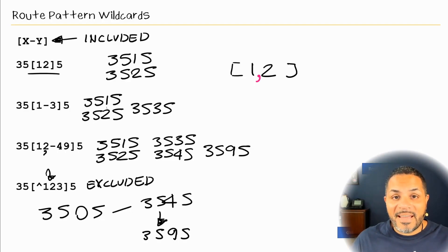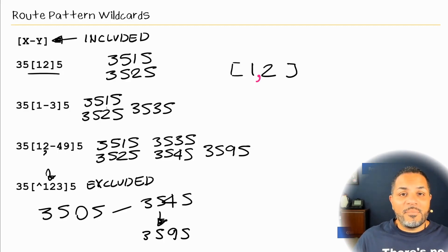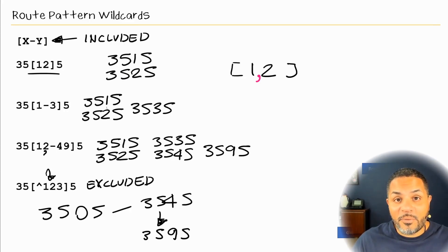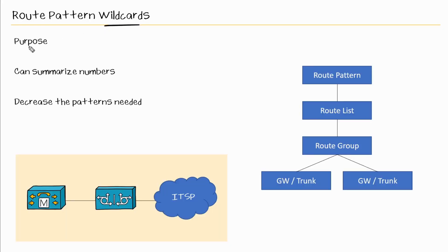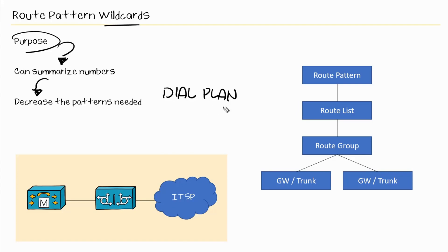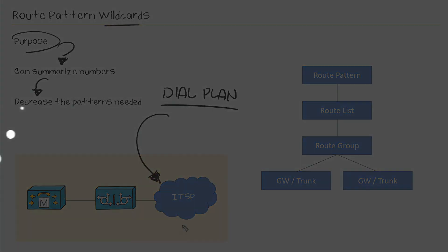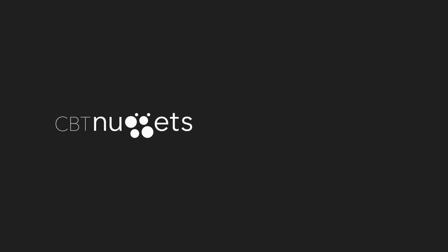With wildcards, we can simplify our dial plan and get creative about which numbers to allow or restrict, while limiting the total number of route patterns needed. Sometimes I log into a CUCM cluster and see many route patterns that could have been consolidated into just two. In this nugget, we looked at route pattern wildcards — their purpose is to summarize numbers in our dial plan and decrease the total number of patterns. We'll see how to use these wildcards when building a dial plan for users reaching the PSTN.